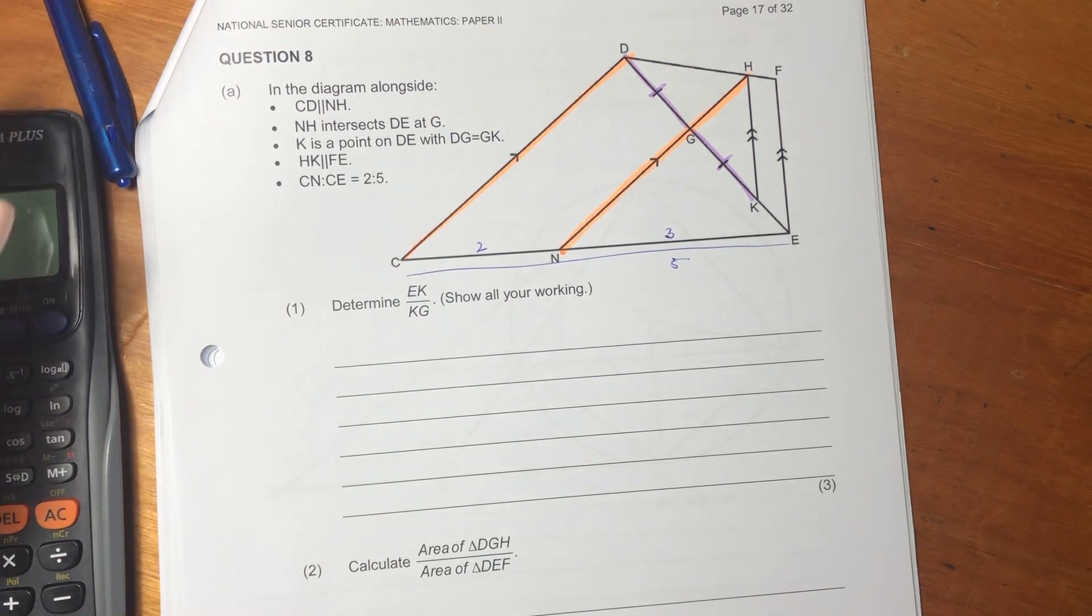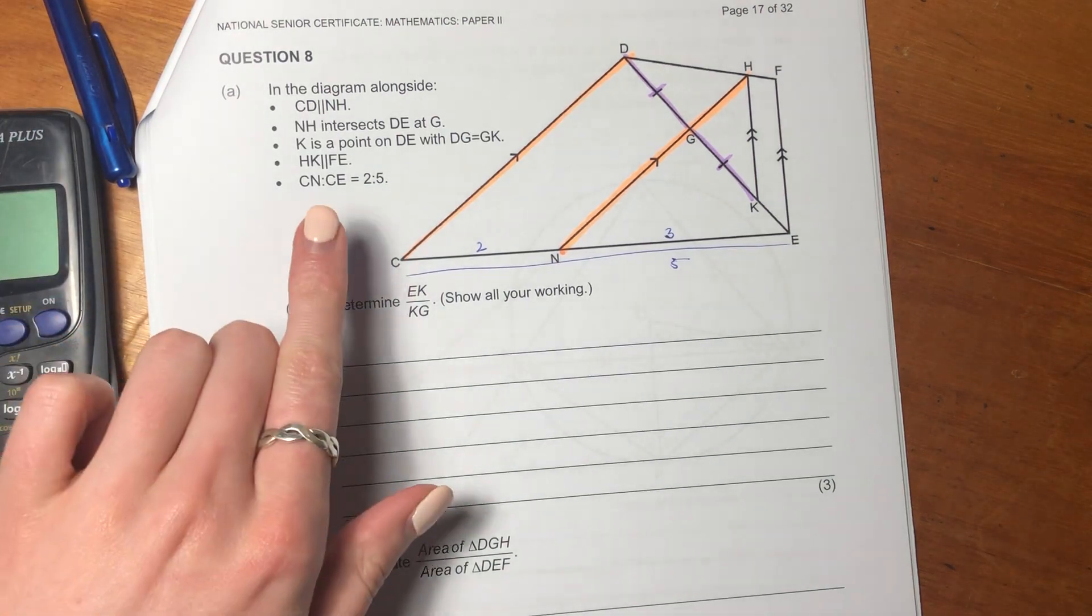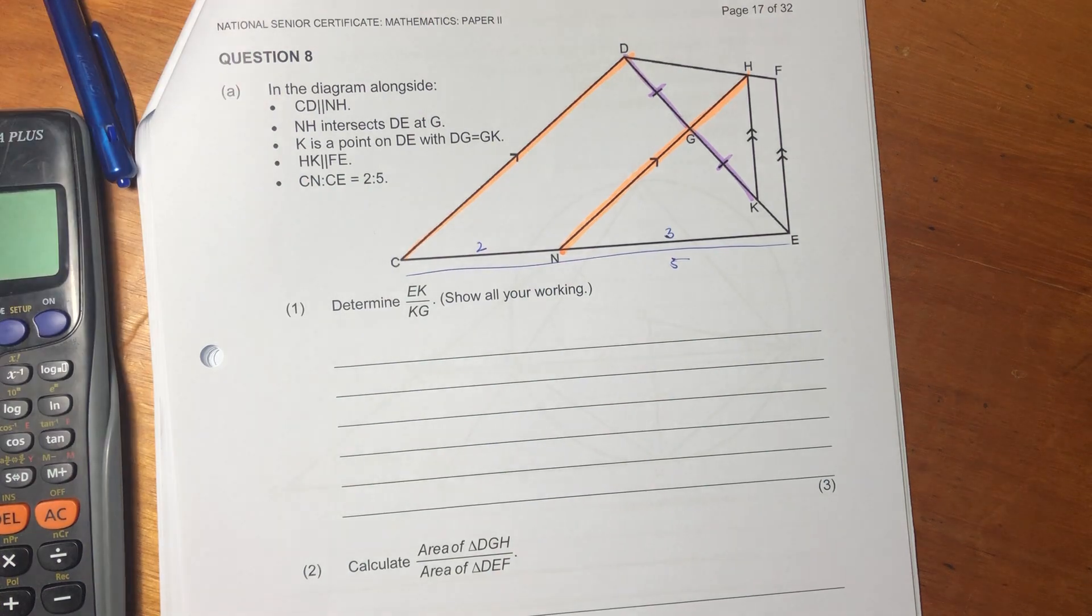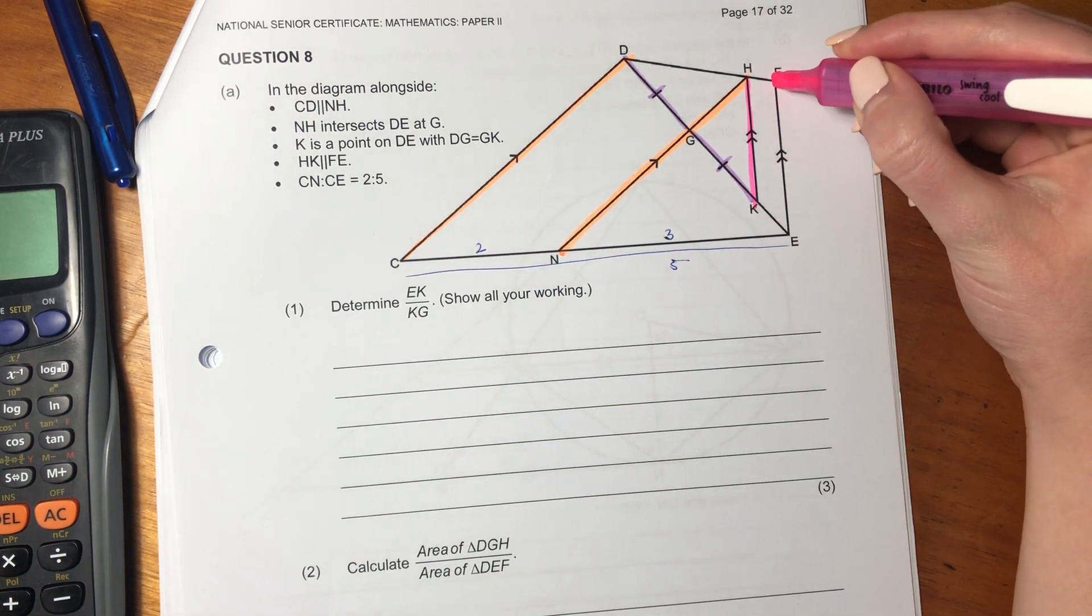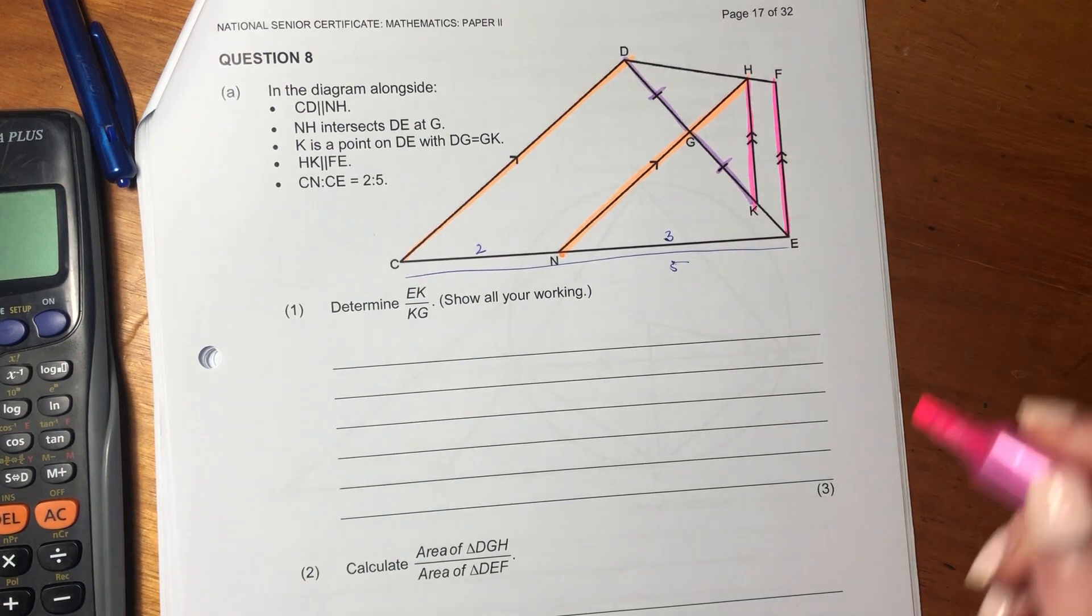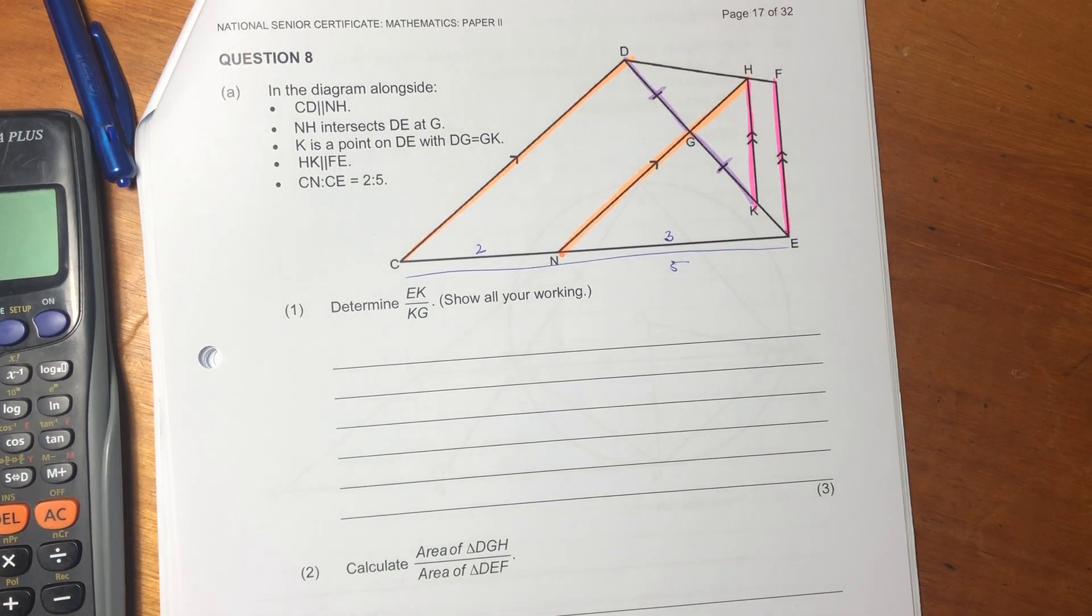Then they said HK is parallel to FE. Now, remember, you might be thinking, oh, why is this important? But remember, when we have these parallel lines like this within a triangle, you should be thinking about the proportionality theorem, which says a line drawn parallel to one side of a triangle divides the other two sides proportionally.